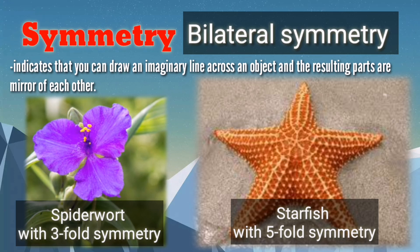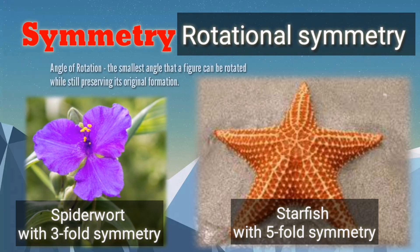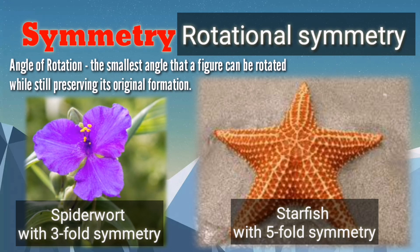Note that if you rotate the spiderwort or starfish by several degrees, you can still achieve the same appearance as the original position. This is known as rotational symmetry. The smallest angle that a figure can be rotated while still preserving the original formation is called the angle of rotation. For the spiderwort, the angle of rotation is 120 degrees, while the angle of rotation for the baby starfish is 72 degrees.